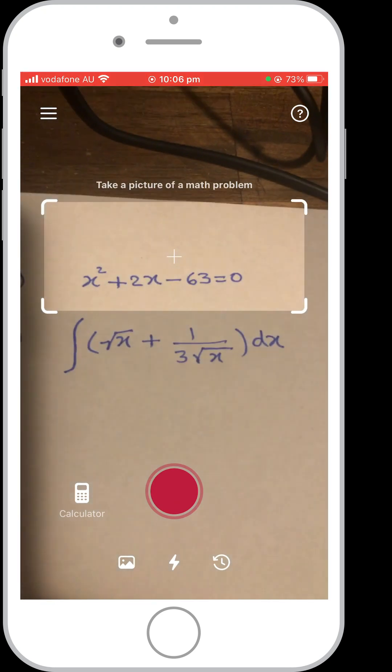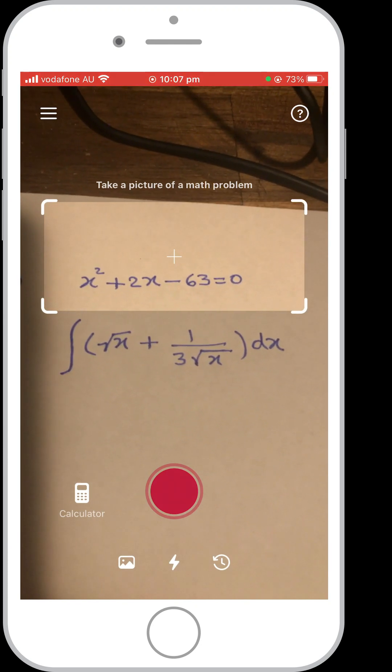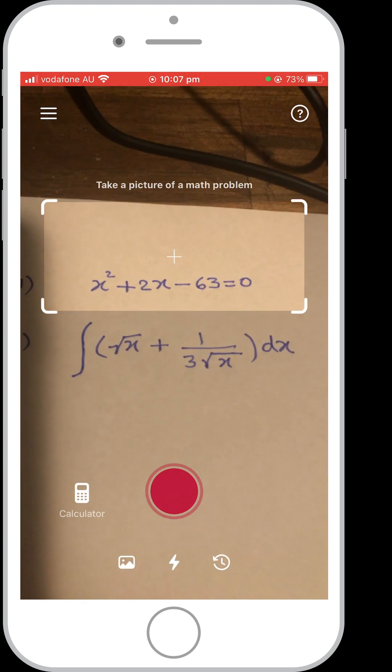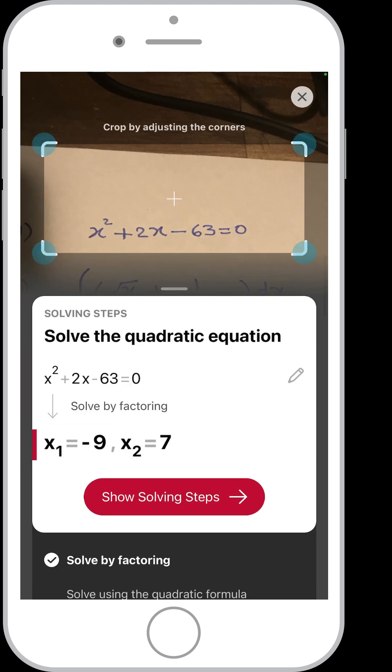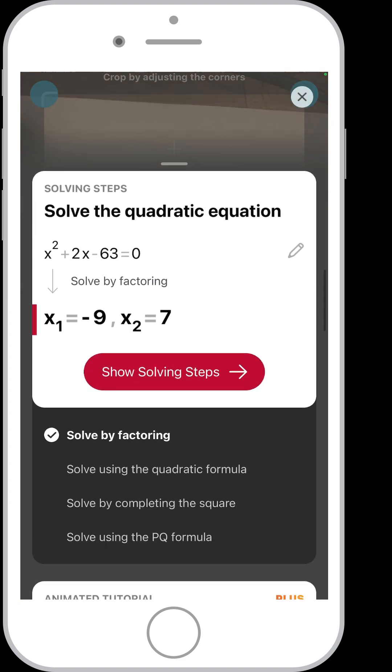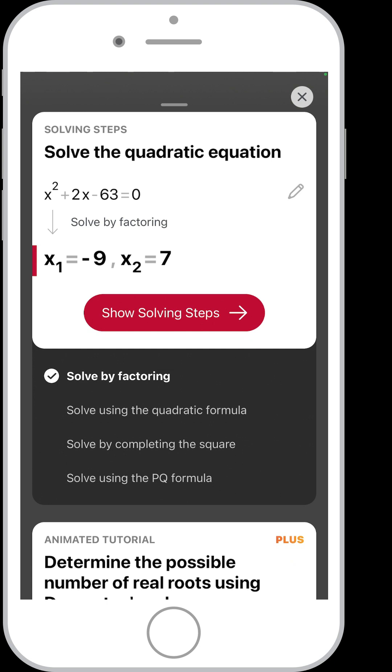First I scan this quadratic equation. I put it within the rectangle and press this red button and instantly the app has provided me the solution. If I scroll down, Photomath is showing me four different ways to solve this problem, and if I click on that I get the solution by using that particular method.